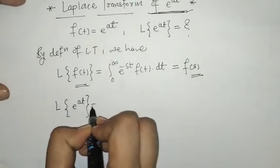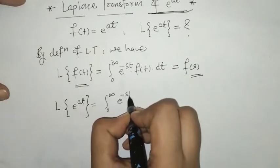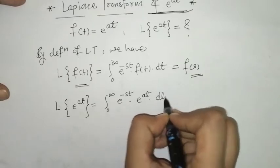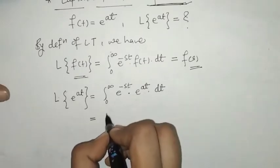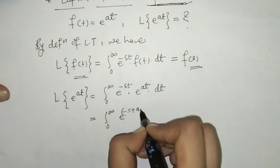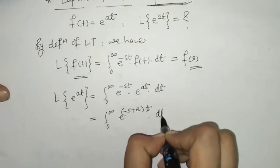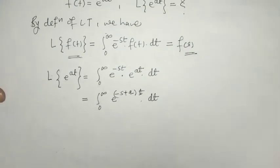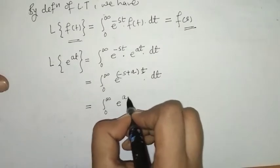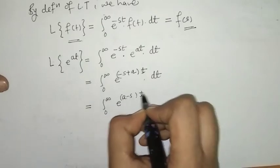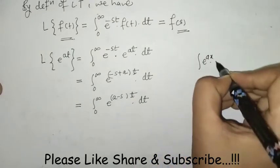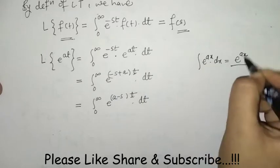Now we put f(t) = e^(at), so we have the integral of e^(-st) times e^(at) dt. We find this integration with respect to t. Taking the exponents together, we can write this as e^((a-s)t).